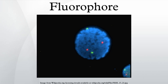Fluorescence: the fluorophore absorbs light energy of a specific wavelength and re-emits light at a longer wavelength. The absorbed wavelengths, energy transfer efficiency, and time before emission depend on both the fluorophore structure and its chemical environment, as the molecule in its excited state interacts with surrounding molecules.